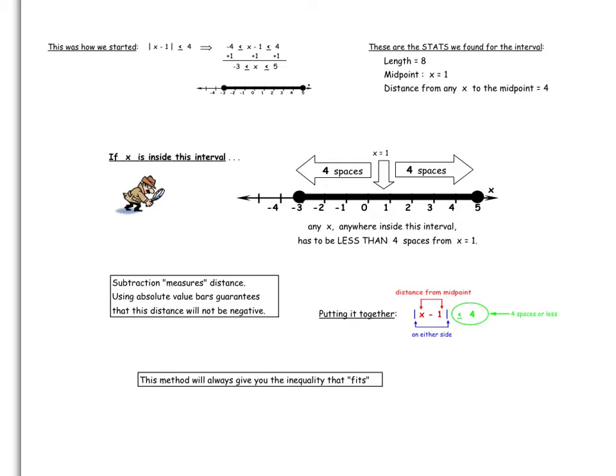Inside, we write that x minus 1 means that the distance from x to 1 is less than 4 spaces. The equal sign because, of course, the end points of the interval, which are included in this problem, are exactly 4 spaces. Absolute value bars to guarantee our subtraction gives us positive distance. Subtract x from the midpoint 1 and say that it has to be less than or equal to the number of spaces we're allowed on either side of the midpoint. This method will always give you an absolute value inequality that fits.